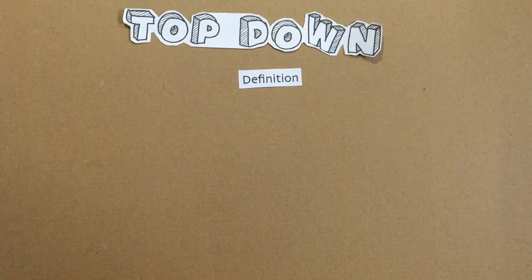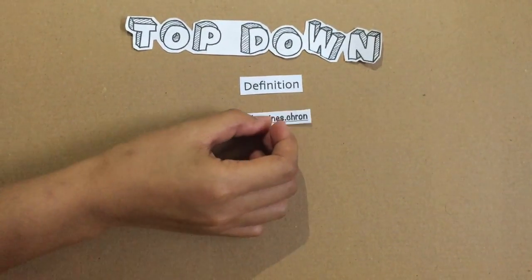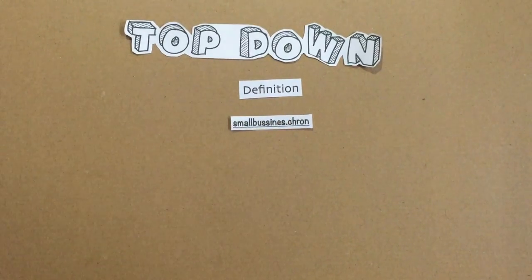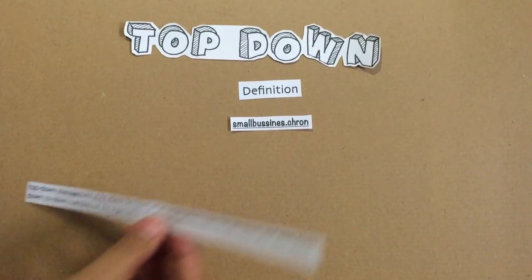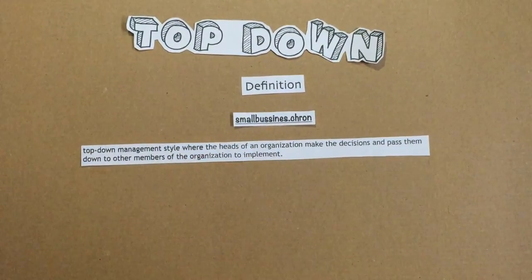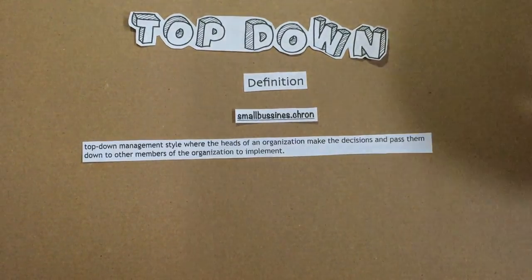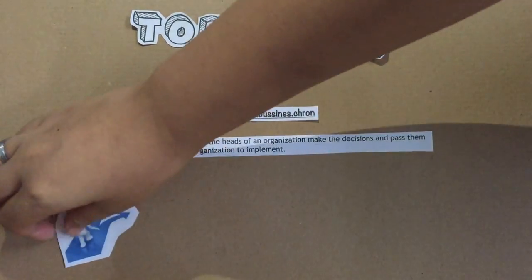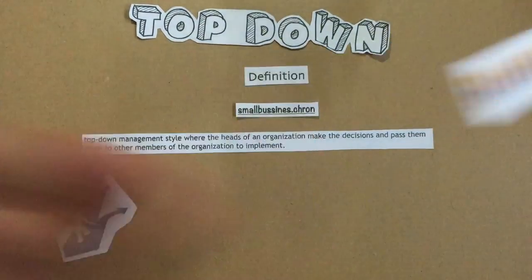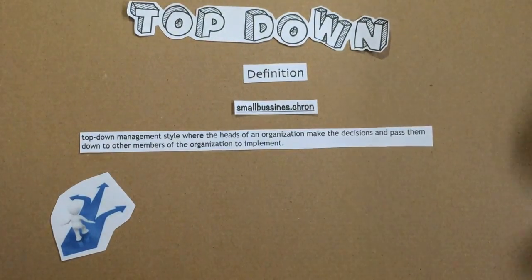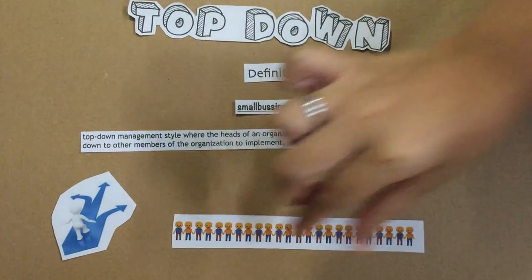Next, we have a definition from smallbusiness.com. From this website, it is stated that top-down is a management style where heads of the organization make the decisions and pass them down to the other members of the organization to implement.